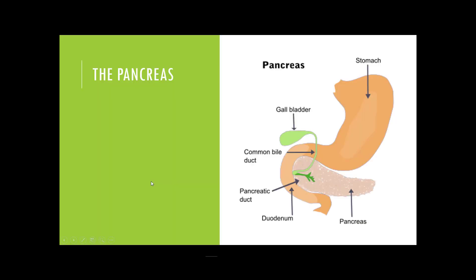The pancreas is an organ in the abdomen. It is connected to other organs such as the stomach, gallbladder, and small intestines, and is critical for digestion. The pancreas is the main organ where digestive enzymes are produced to digest carbohydrates, fats, and protein. It also produces hormones such as insulin and glucagon to regulate blood sugar levels.